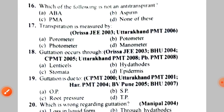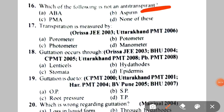Next: which of the following is NOT an anti-transpirant? A. ABA, B. Aspirin, C. PMA, D. None of these. The correct answer is D — none of these, because all three — ABA, aspirin, and PMA — are anti-transpirant substances.